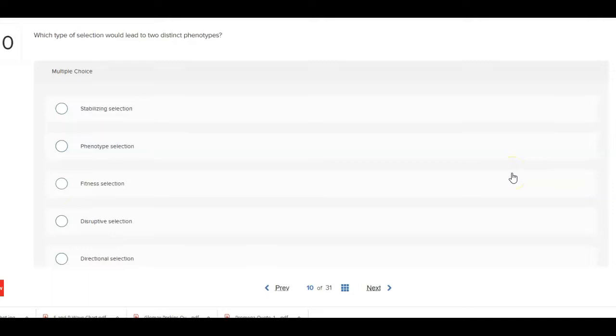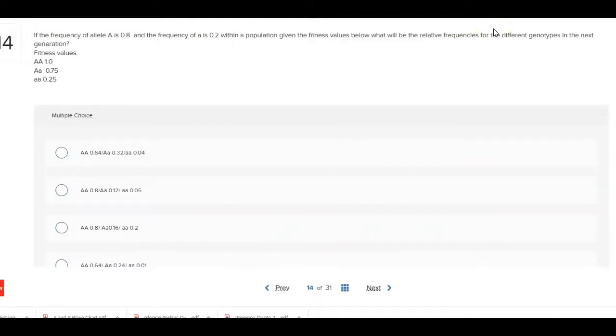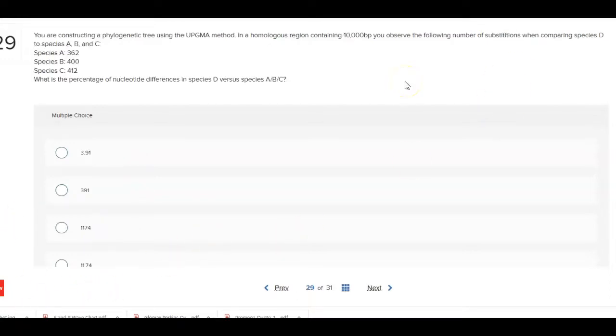One way of asking you about the different types of selection - knowing an example leading to two distinct phenotypes, basically almost two bell curves with a hump with a very low trough in the middle. This is another good question, semi-related to Hardy-Weinberg, but also understanding the allele frequencies and fitness values. This would be one of the examples using the UPGMA method for identifying percentage of nucleotide differences in organisms. I don't care that you see it now, you have time to work on it.